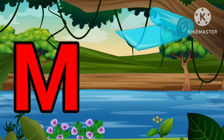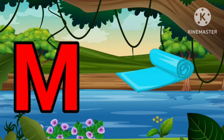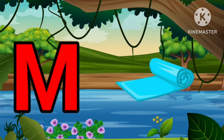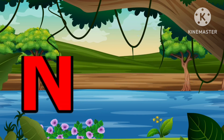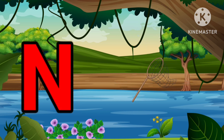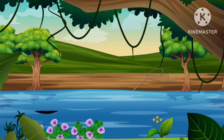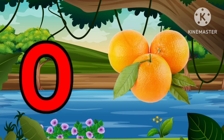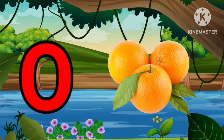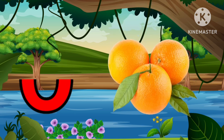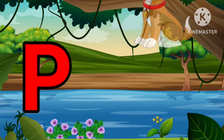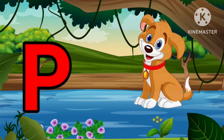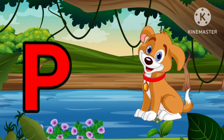M is for Mat, M-M-Mat. N is for Net, N-N-Net. O is for Orange, O-O-Orange. P is for Pet, P-P-Pet.